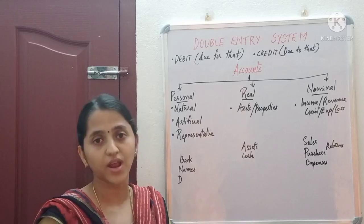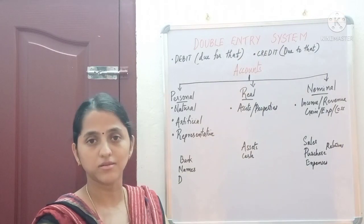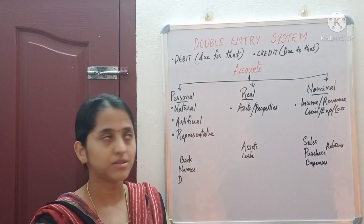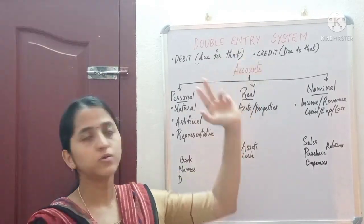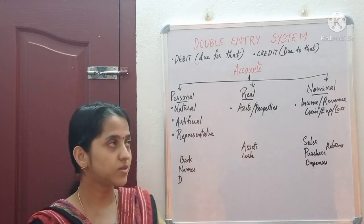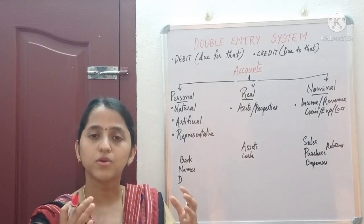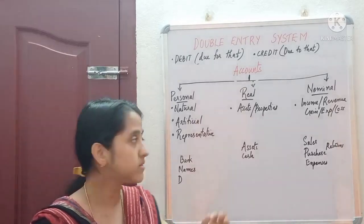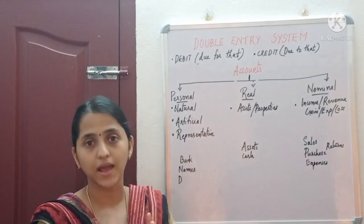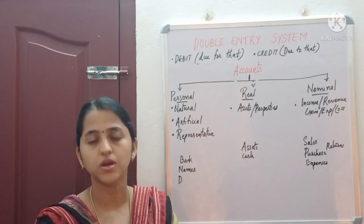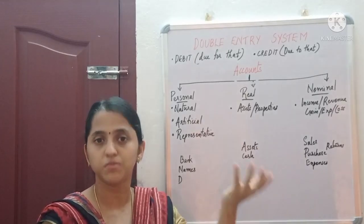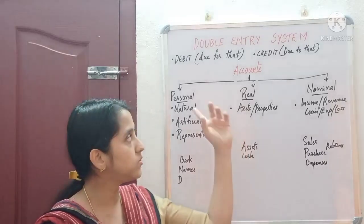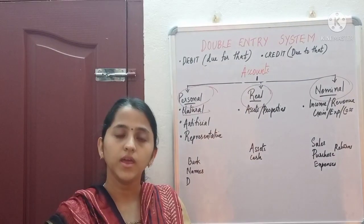In accounting, we record all transactions using the double entry system of bookkeeping. How we classify the two aspects is based on the type of accounts. For all the items in accounts, there are classifications called accounts. In our example, we purchased goods for cash, so the receiving aspect is the purchase and the giving aspect is cash. Each of these is categorized into a different type of account.